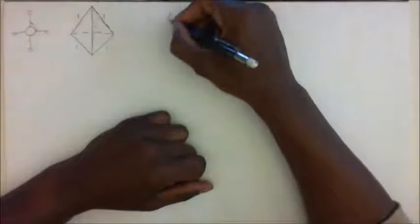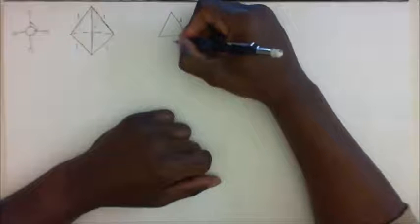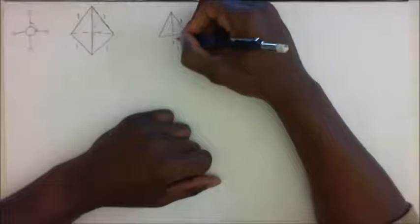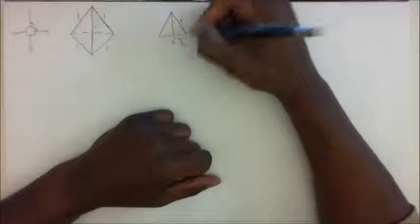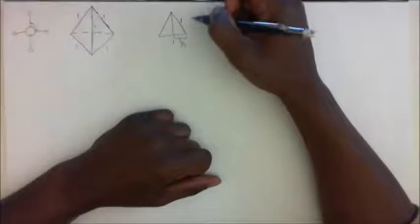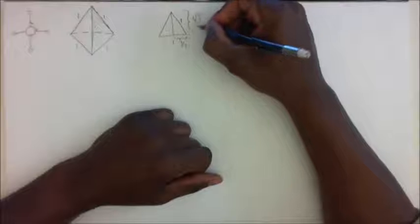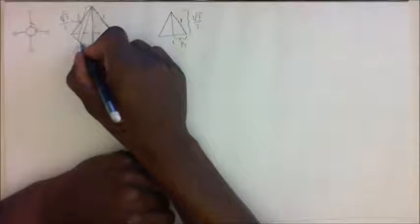Now we're going to look at one of the faces, which as we said before is an equilateral triangle with a side of one. If I cut that in half, we'll know that that is one half. Using the Pythagorean theorem: one minus one half squared is one minus a quarter, which is three quarters. Taking the square root of that, the height is the square root of three over two. So we know that this side and the bottom side resting on the surface are both equal to the square root of three over two.